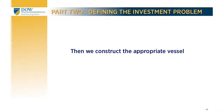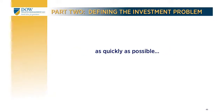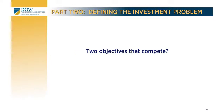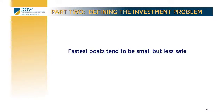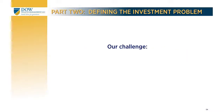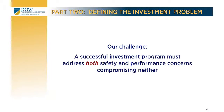Only once we have a clear picture can we construct an appropriate vessel to take us on our journey. Let us assume that all we know is that we need a boat that will get us to our destination as quickly as possible, but that will also minimize the possibility of capsizing. Usually these two goals compete with one another — the safest boats tend to be large but slow ocean liners, while the fastest boats are small and light but less safe. So we have a challenge.